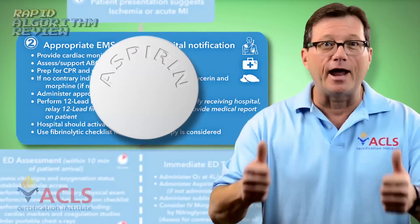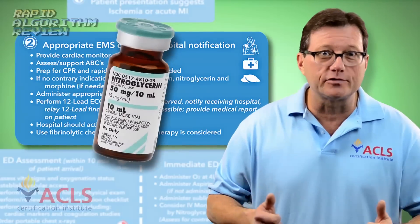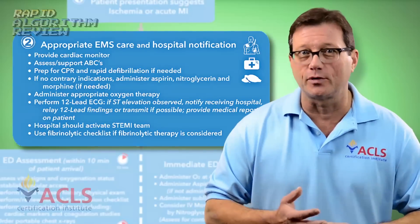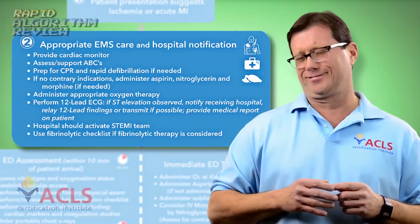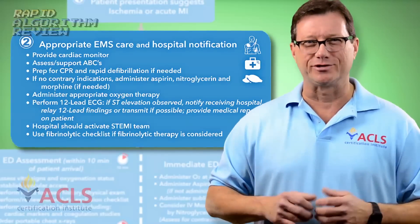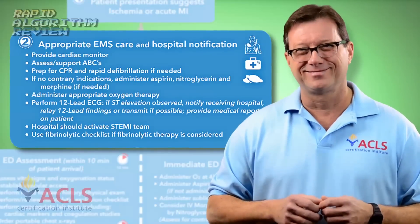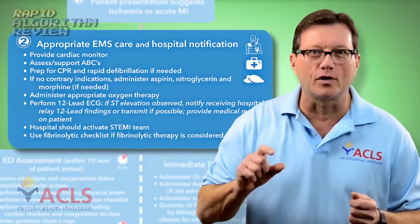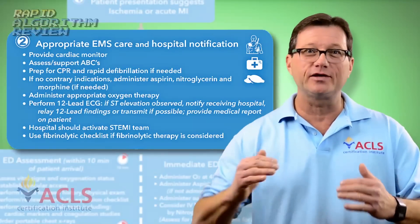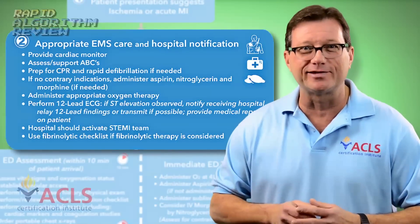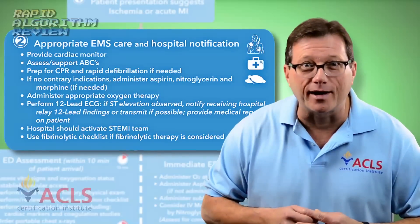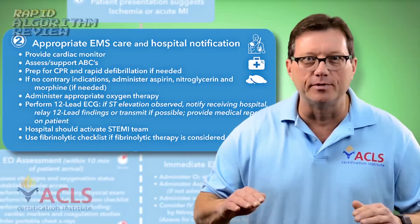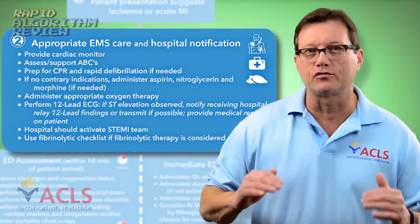Start administering medications. If there are no contraindications, administer aspirin. Nitroglycerin as well, if there are no contraindications. You need to ask the patient if they've taken Viagra or Cialis within the last 24 to 48 hours. If they have been taking that drug and you give nitroglycerin, it may potentiate it and cause a precipitous, fatal drop in blood pressure. Do not administer the nitro in that case, as it can cause a precipitous fatal drop in their blood pressure.